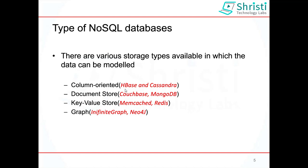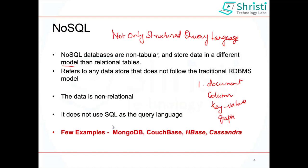Examples for column-oriented databases are HBase and Cassandra. Examples for document-oriented databases are Couchbase and MongoDB — and MongoDB is what we are going to learn now. Examples for key-value store are Memcached and Redis. Examples for graph databases are Infinite Graph and Neo4j. One more thing: NoSQL databases don't use SQL as the query language, and they don't require a schema.